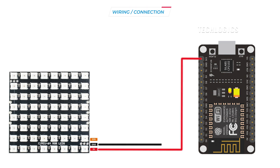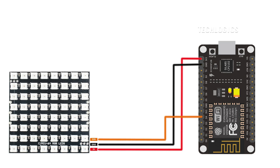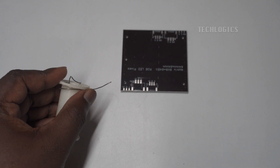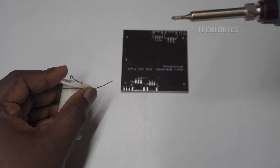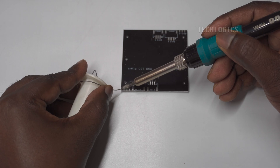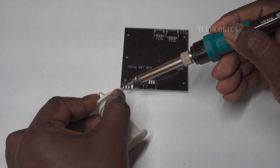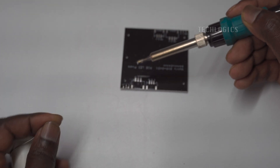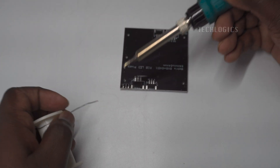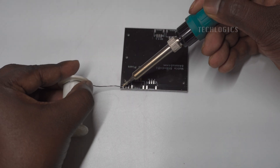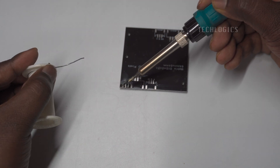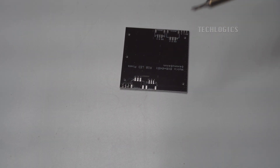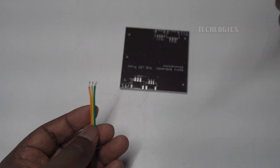To start this project, first prepare the WS2812B 8x8 LED matrix panel by soldering jumper wires to its power, ground, and data input pins to ensure reliable connections, which is especially important when powering multiple LEDs. Begin by identifying the +5V, GND, and data in pins on the LED matrix panel, then carefully solder one jumper wire to each of these pins.